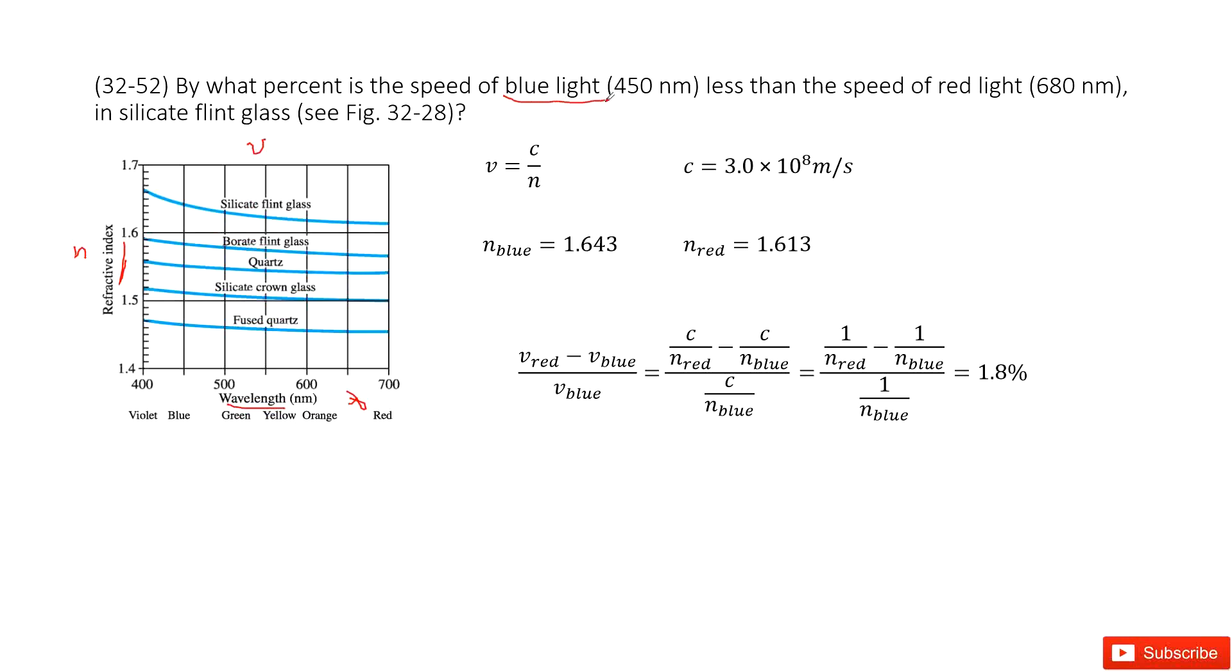So now for the blue light, from this picture, we can know the index is 1.643. So we just check it, 440, and come to the matrix there. See? So 1.643.